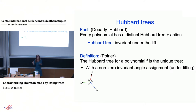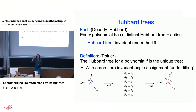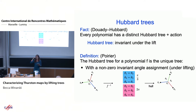Poirier says a tree is a Hubbard tree if it has an invariant angle assignment. For the rabbit, the angles just rotate, giving two separate systems of linear equations: one determining angles of π/3 around the central vertex, and one determining that angles at outer vertices are all 2π.